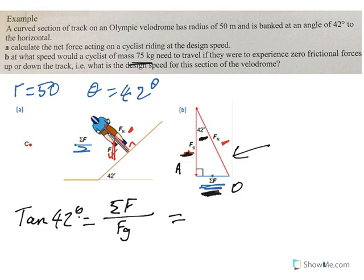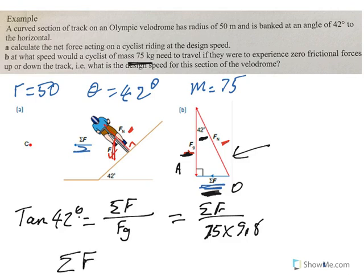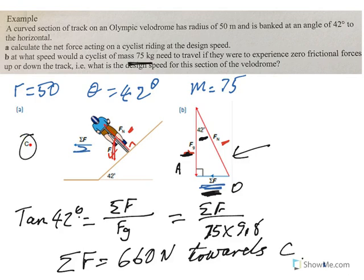Now when you look in the second part, it says the cyclist has a mass of 75. Now unless we use that, we can't actually do the question. So tan 42 is the sum of the forces over 75 times 9.8. And then when we get our calculator out and do the calculation,